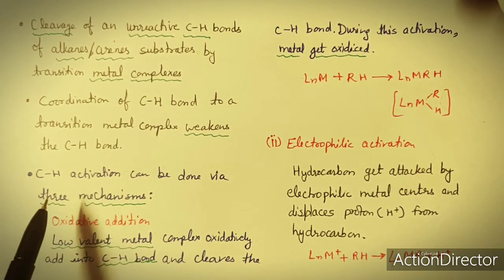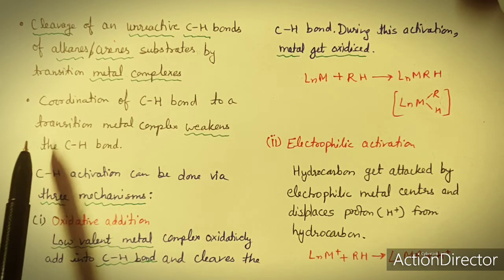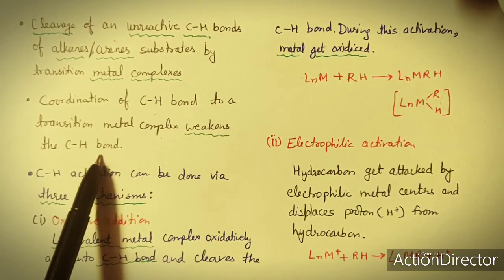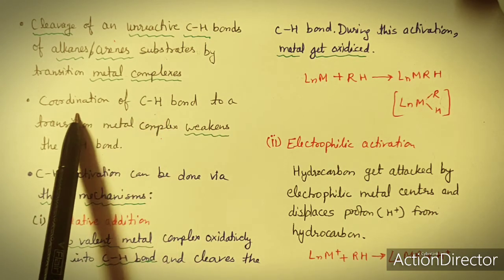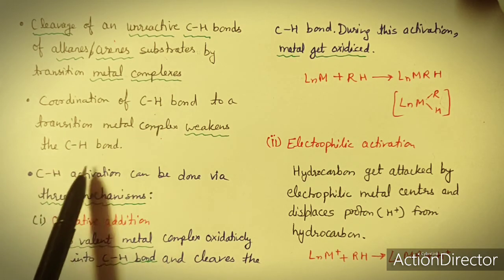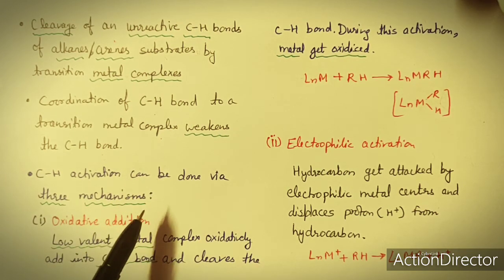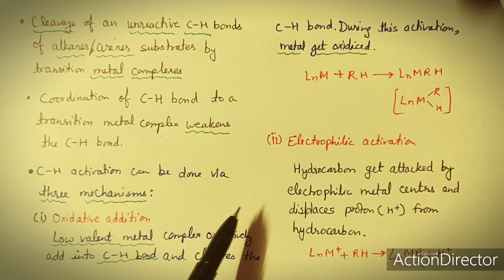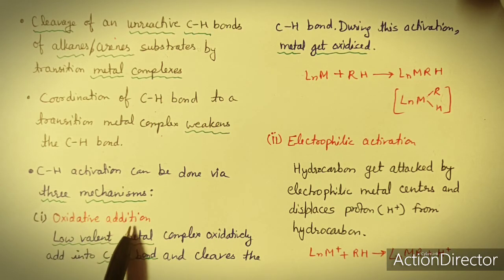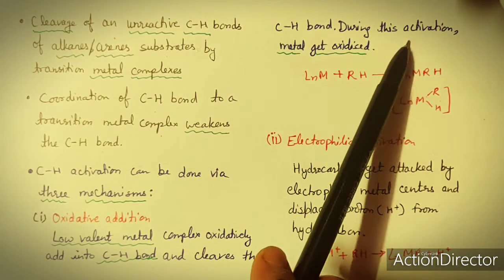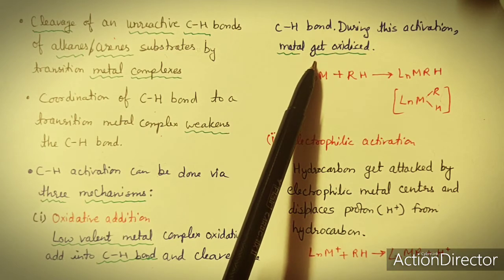Activation means to make the bond more reactive — to break it. C-H activation involves coordination of the C-H bond to a transition metal complex, which weakens the C-H bond. C-H activation can be done via three main mechanisms, though other pathways also exist. The first mechanism is oxidative addition, where low-valent metal complexes oxidatively add into the C-H bond and cleave it.